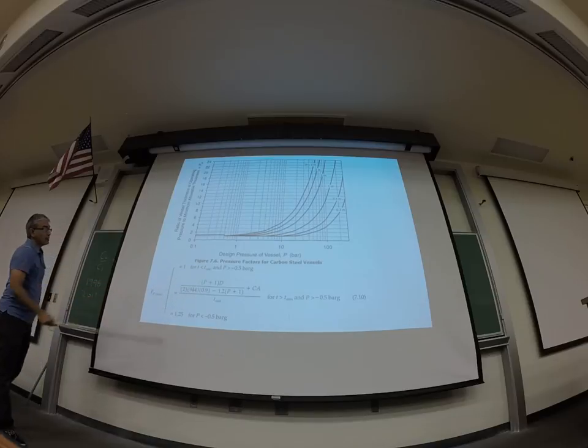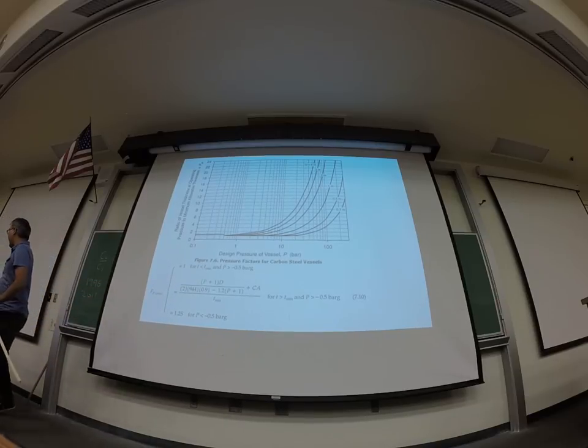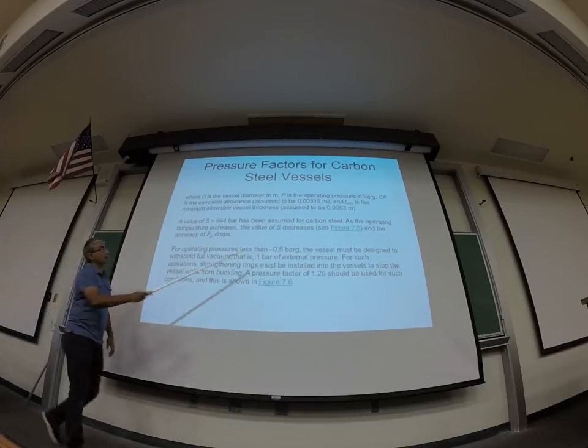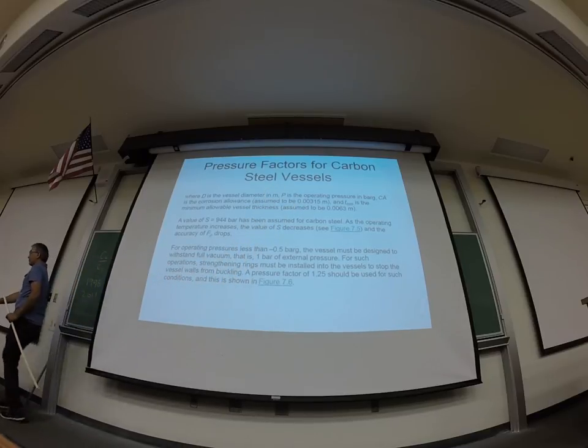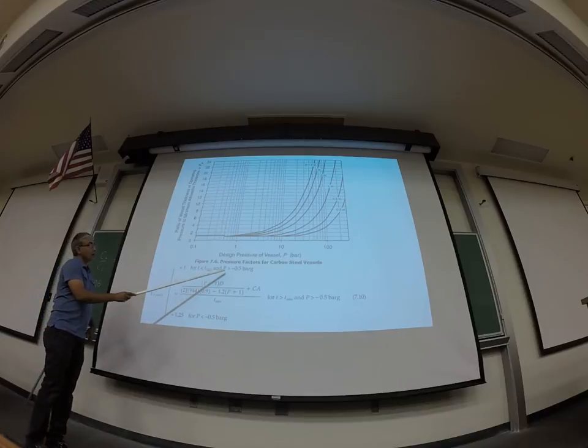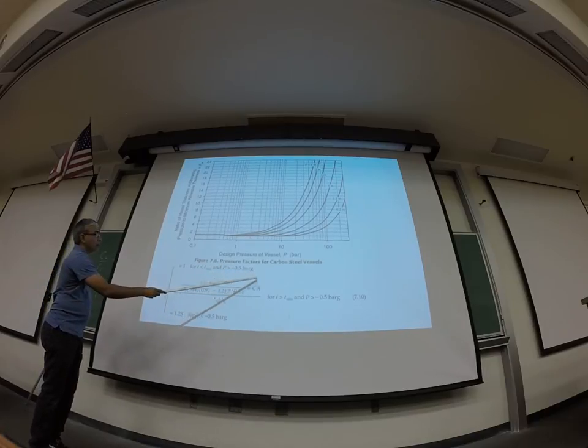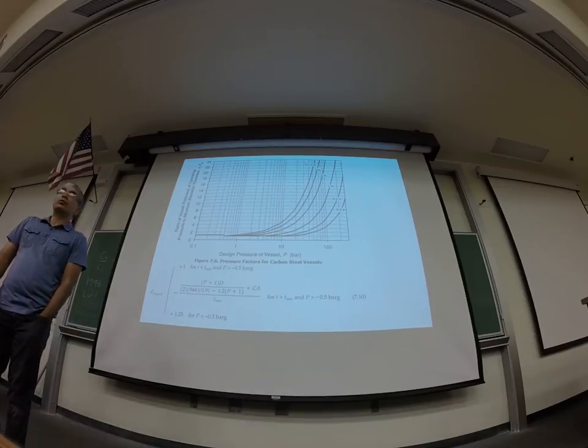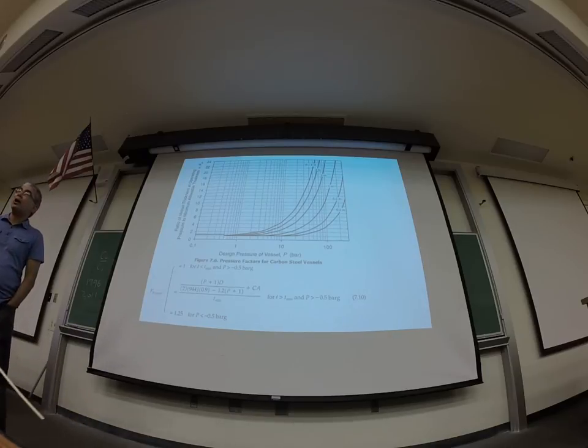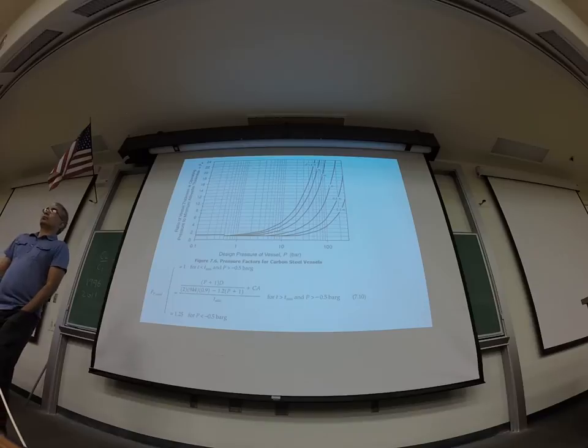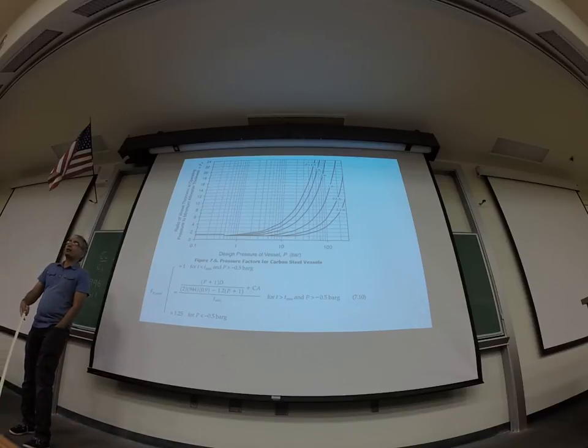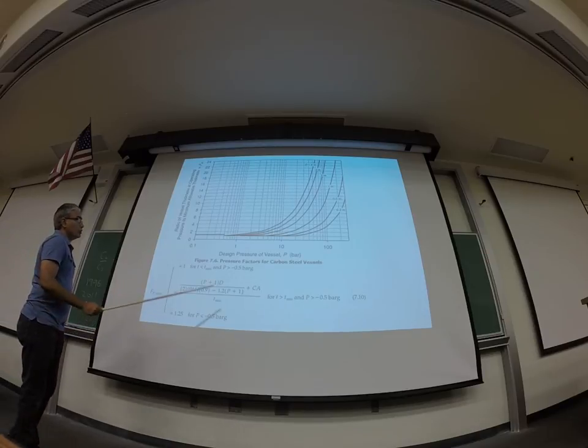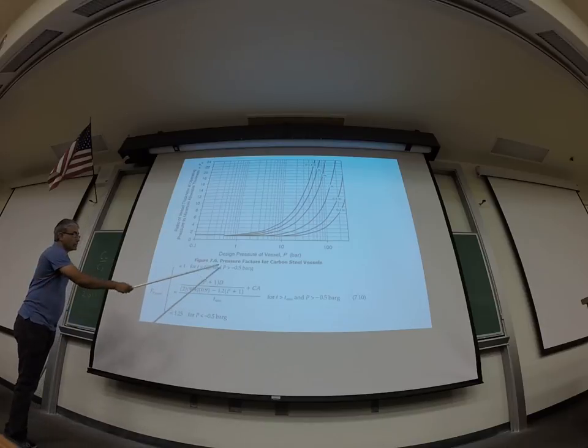So you look at the pressure and you look at this equation, Fp. So T minimum, this actually, all these terms are described in the next slide. T minimum is the minimum thickness that pressure vessels can have. And that value is 0.00315 meter. So this is the minimum thickness. Okay? So that's where T minimum is in the previous line. And P, of course, is the pressure. What is bar G? Bar G. It means pressure with reference to bar. Right? So what is one atmosphere on the bar G scale? One. One atmosphere is almost one bar.